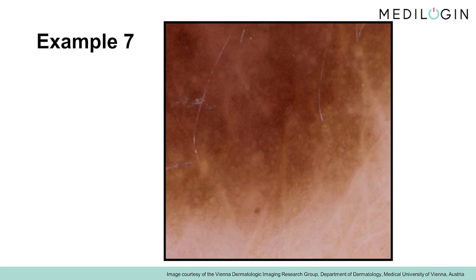Let us now switch to the basic pattern of circles. Here you can see an example of an image where the circles are relatively difficult to recognize, because the color difference is not very strong. The circles have a dark pigmented edge on the outside, and are clearly lighter on the inside. In this section, they form the basic structure of the nevus.